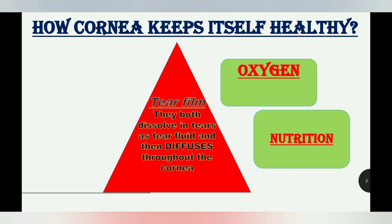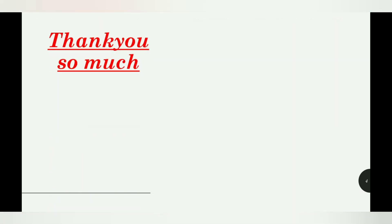The cornea needs oxygen and nutrition, and it gets these basically through the tear film. Both oxygen and nutrition dissolve in the tear fluid. After dissolving in the tear fluid, they get distributed throughout the cornea by the diffusion process.